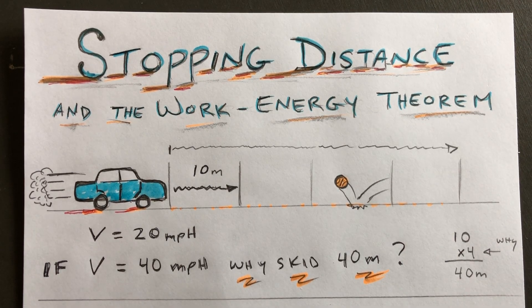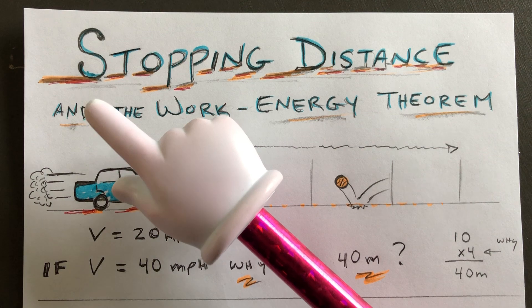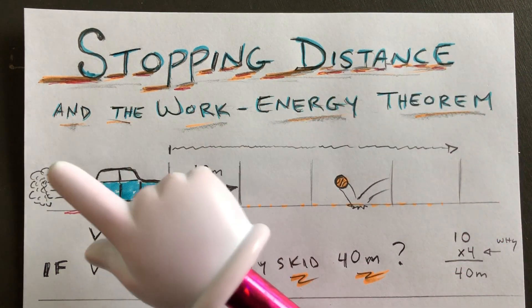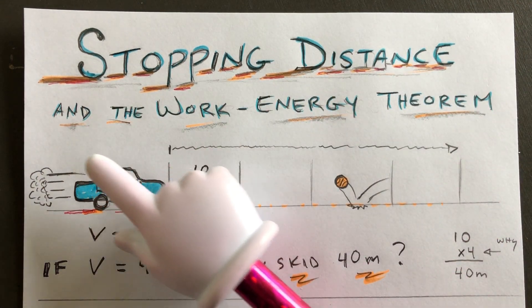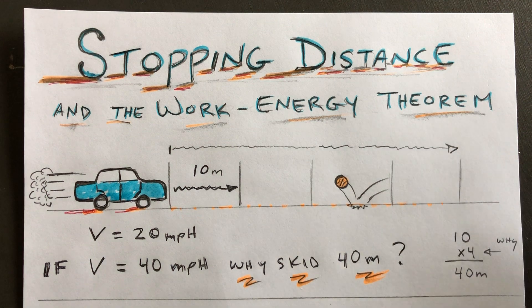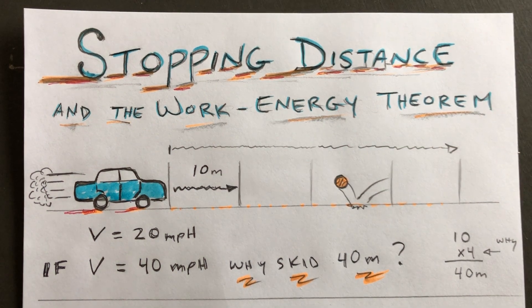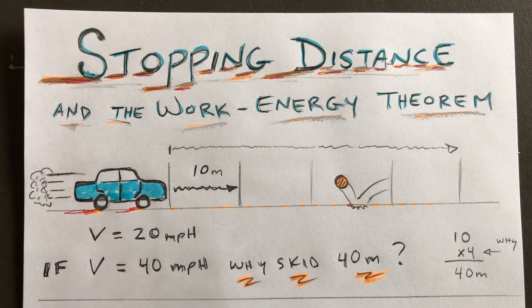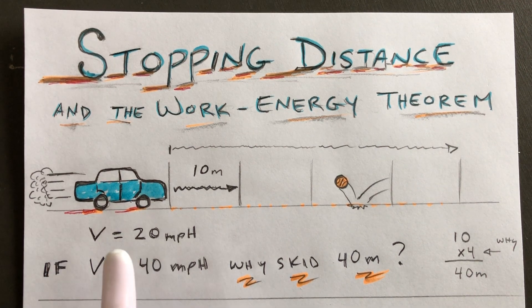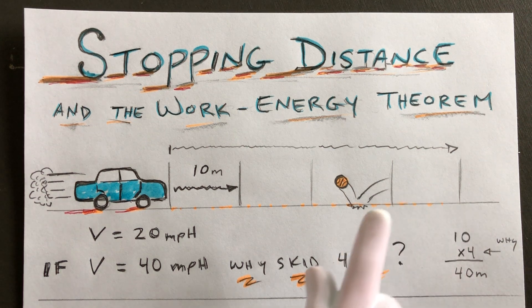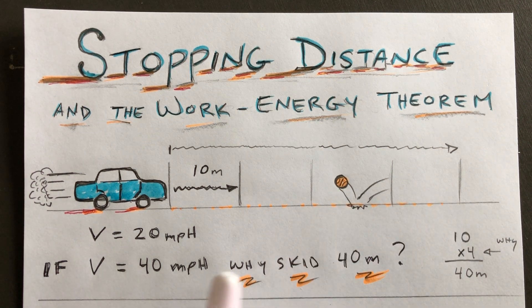Hey everyone, I was told to make a video about stopping distance or skidding distance and the work-energy theorem. So typically in class I give students a question like this. Let's say you're driving down the road at 20 miles per hour and a ball bounces out in front of you and you slam on your brakes.